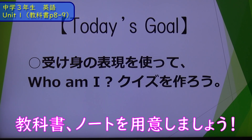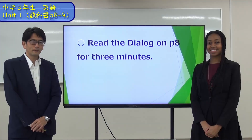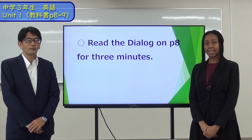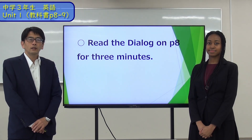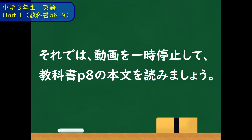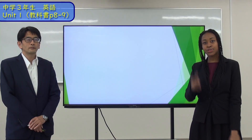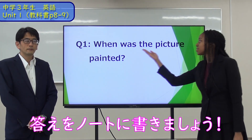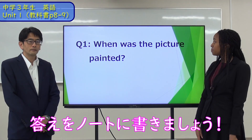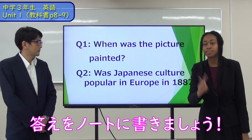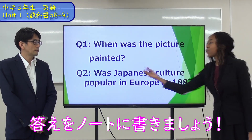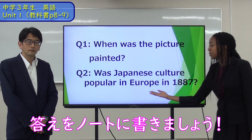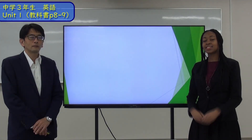Today's goal. I have two questions. Question 1: When was the picture painted? Question 2: Was Japanese culture popular in Europe in 1887? Okay, so let's check the answers.